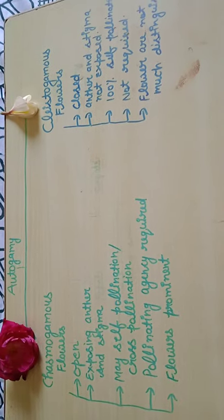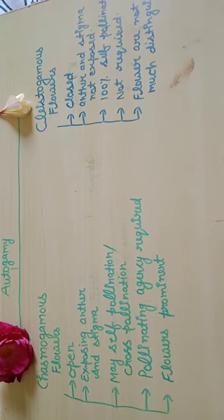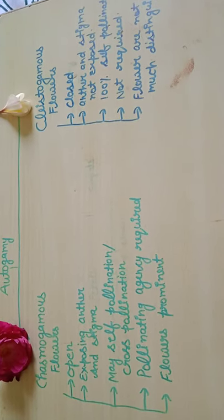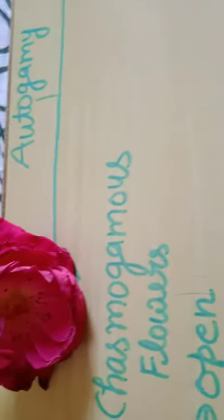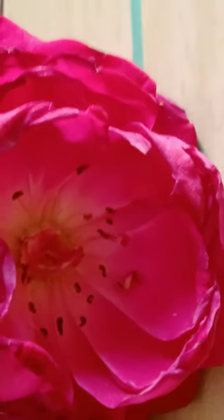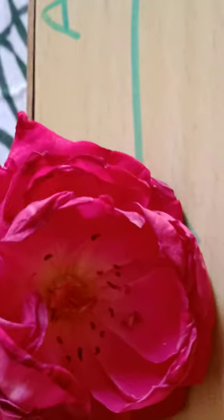The first type is the chasmogamous flower. I will visualize this for you today. Let me now explain what chasmogamous flowers are and what makes them this type of flower — we call them chasmogamous.